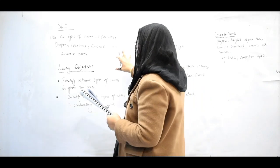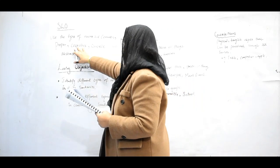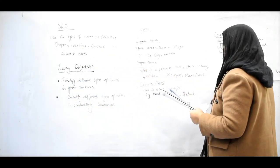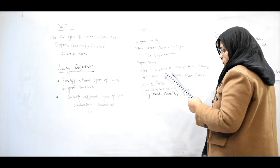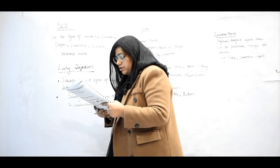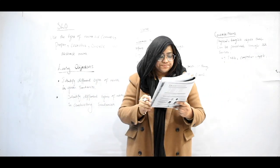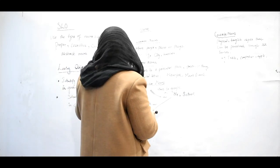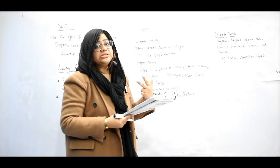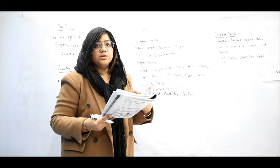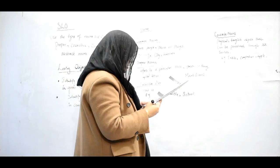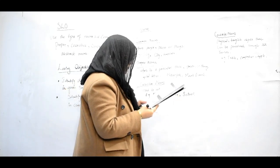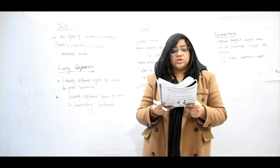We have already discussed proper nouns, collective nouns, and concrete nouns. Now, abstract nouns are different — they represent different kinds of behaviors and feelings, things that cannot be physically touched or seen.